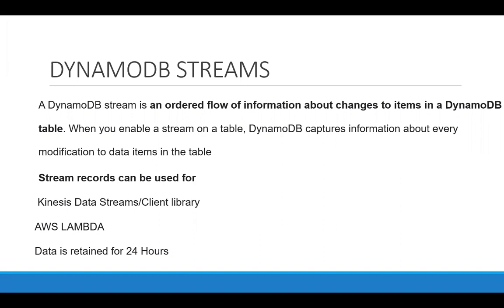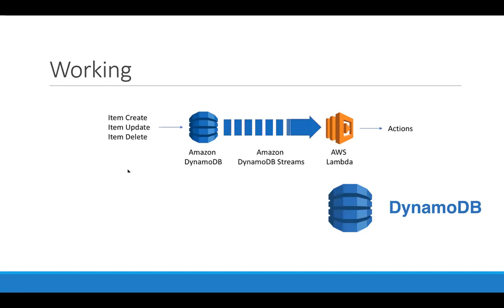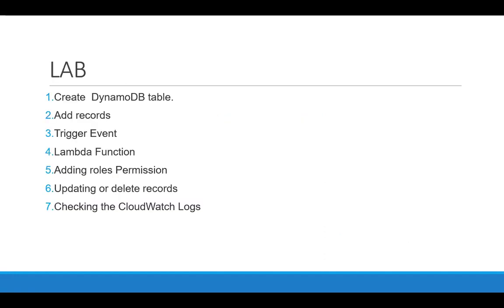We'll see how to view the logs from CloudWatch. DynamoDB Streams is used for analytics purposes, Elasticsearch, cross-regional applications, and real-time changes. Whenever any item is created, updated, or deleted, Amazon DynamoDB Streams, with the help of AWS Lambda, records those actions. We can also feed those records to Kinesis or use them for Elasticsearch.